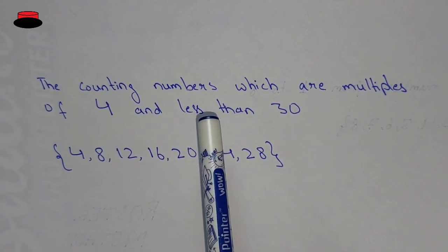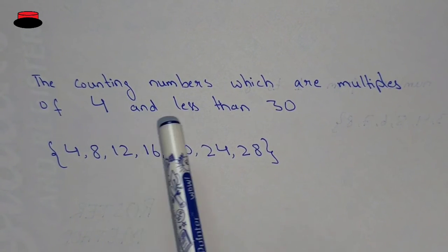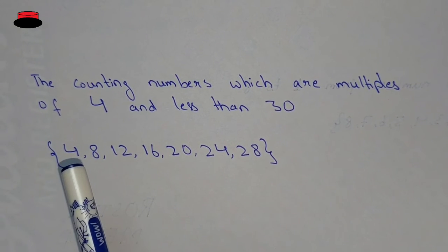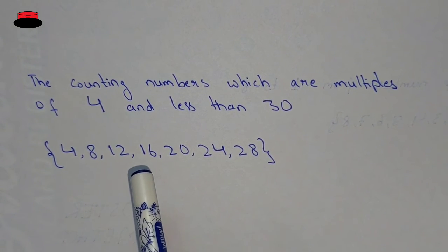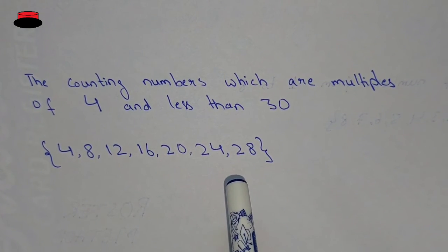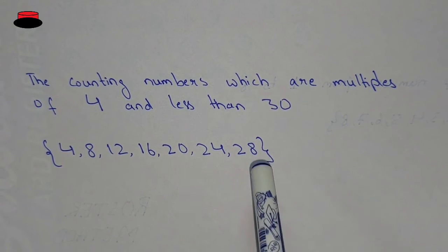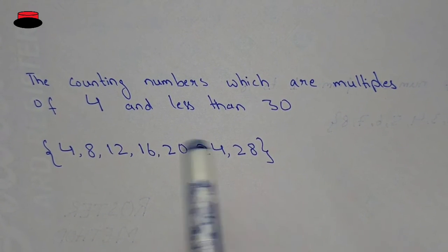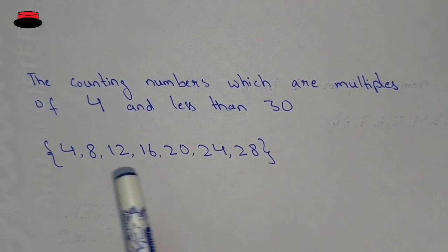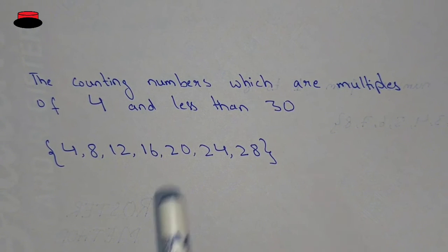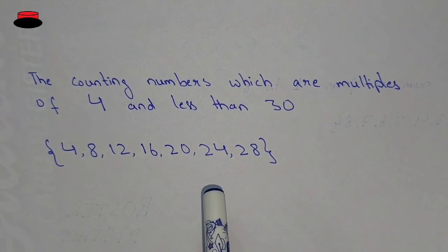And in the same way, the counting numbers which are multiples of 4 and less than 30: 4, 8, 12, 16, 20, 24, 28. These all are written inside the two curly brackets, separated by commas. So these are written in the roster form.